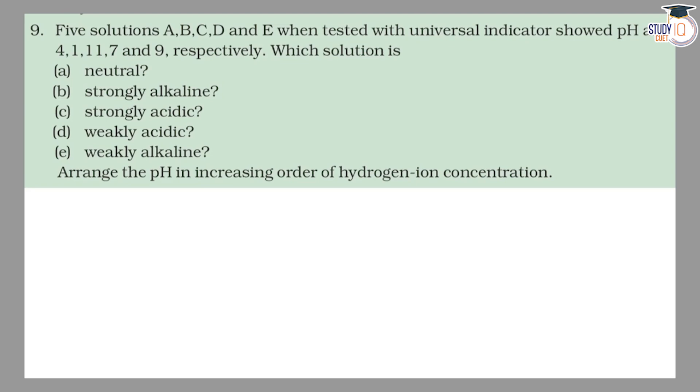Which solution is neutral, strongly alkaline, strongly acidic, weakly acidic, weakly alkaline? So five solutions A, B, C, D, and E are given and pH is given 4, 1, 11, 7, and 9.